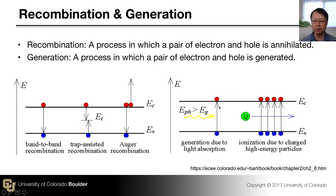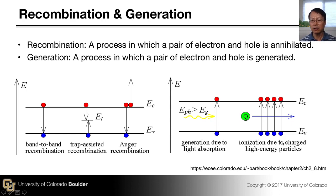For generation, if incoming light has energy greater than the band gap, a valence band electron can absorb that energy and be promoted to the conduction band, generating an electron-hole pair — this is photo-generation. There is also impact ionization, the inverse process of Auger recombination, which will be discussed in more detail when we cover junction breakdown.